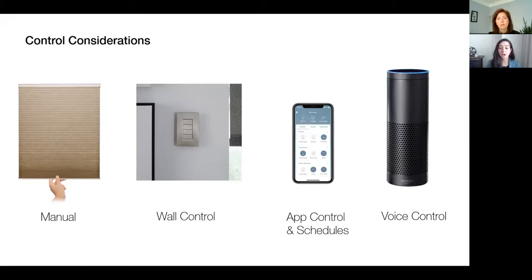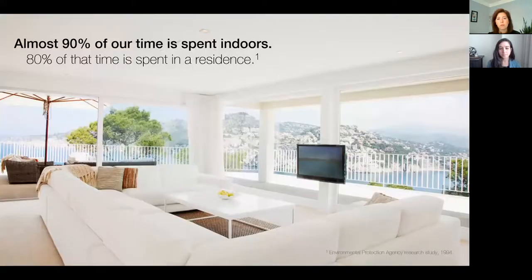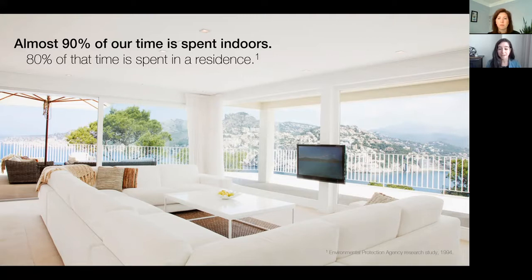Manual control is an option, but studies on shade control show that manual shades are basically never moved and they're often down. All of a sudden that beautiful view — perhaps the inspiration for your design of their home — it's gone. We spend most of our time indoors, and a lot of that is in our home. When we talk about designing with well-being in mind, we know we need to bring the outside in. Countless studies have indicated that natural light can improve mood and sleep patterns, so it's important to consider the massive positive impact automated shades can have on the client.